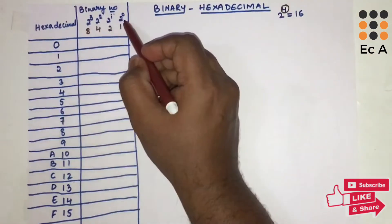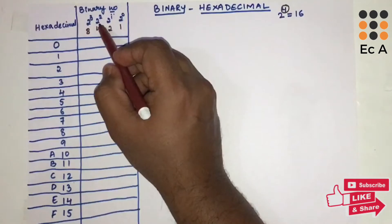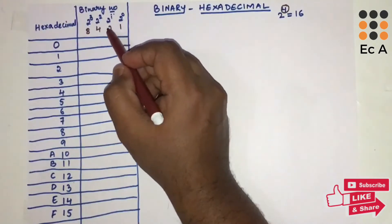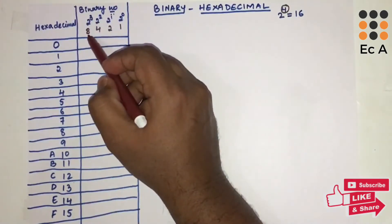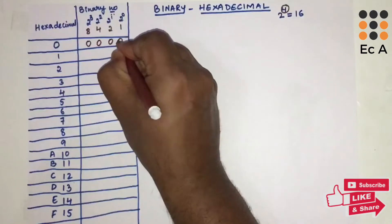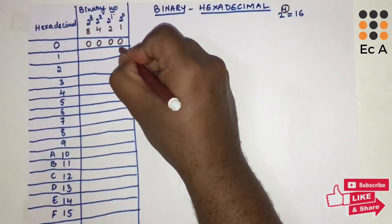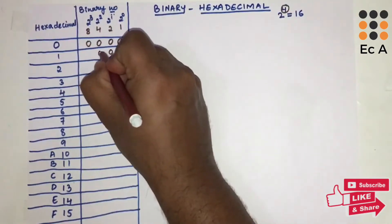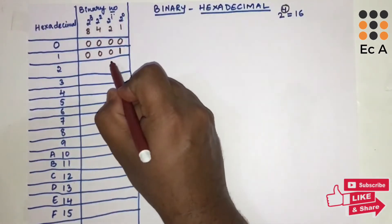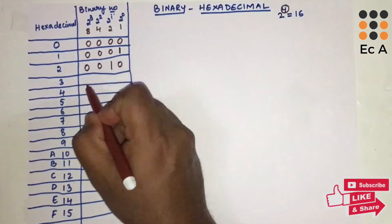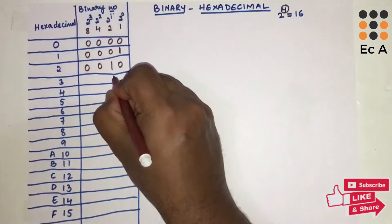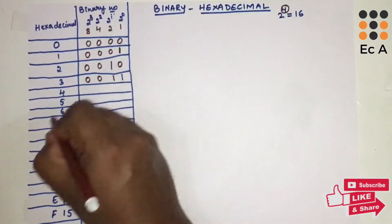We use 4 bit positions with place values 2⁰=1, 2¹=2, 2²=4, and 2³=8. To get 0, all bits are 0. To get 1, only the 2⁰ bit is 1. To get 2, only the 2¹ bit is 1. To get 3, the 2⁰ and 2¹ bits are 1 (2+1=3). To get 4, only the 2² bit is 1.